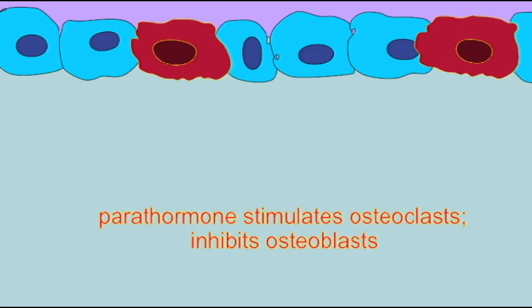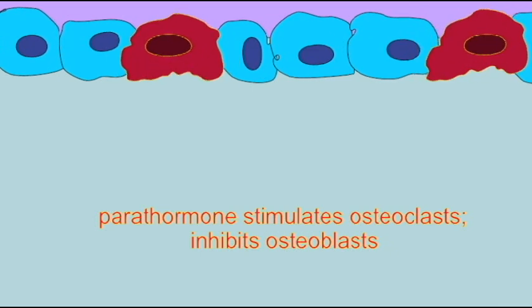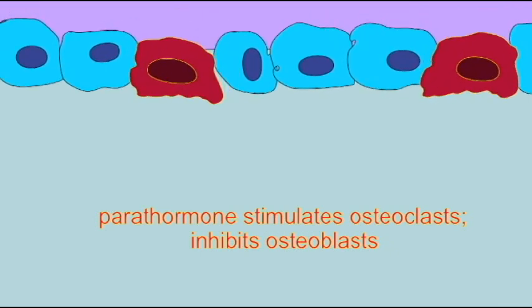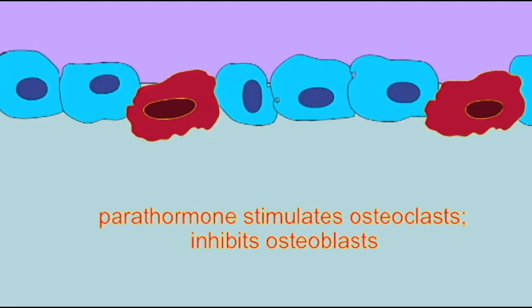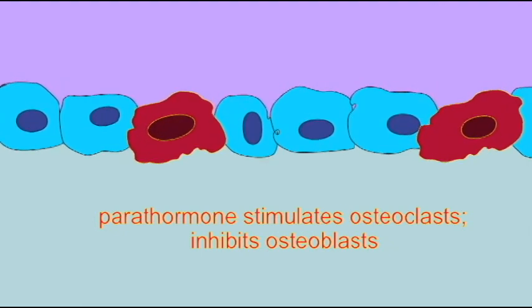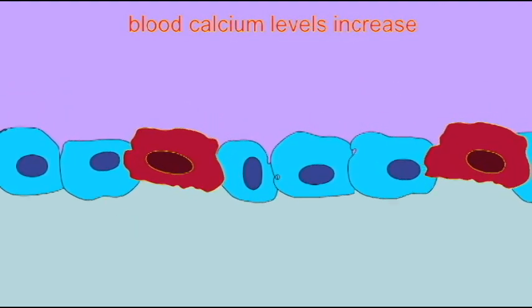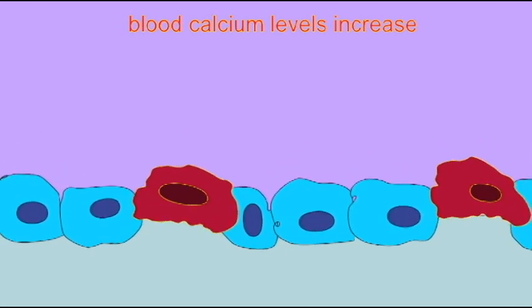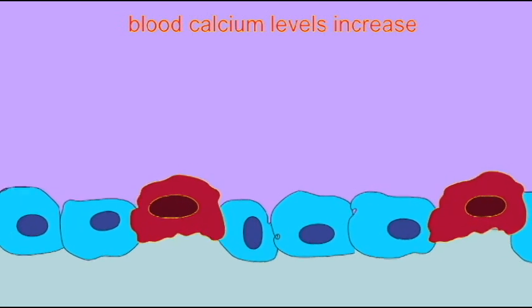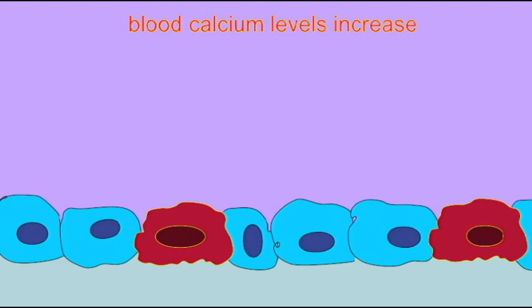When our blood calcium becomes too low, we need to increase it, and in part we do so by dissolving some of our bone and releasing this calcium into the bloodstream. There are cells known as osteoclasts which dissolve bone, and parathormone stimulates the osteoclasts so we dissolve bone, and inhibits the osteoblasts so we make less bone. As a result, the skeleton decreases in mass, and the calcium which is released then raises blood calcium levels back into its normal range.